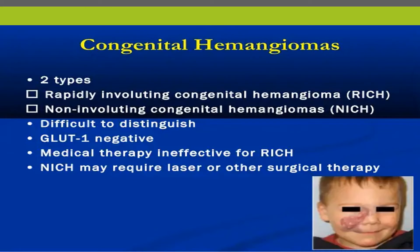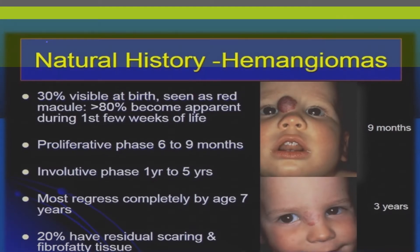Congenital hemangioma is classified into two types: rapidly involuting congenital hemangioma (RICH) and non-involuting congenital hemangioma (NICH). It is difficult to distinguish both by appearance, but both are GLUT1 negative, unlike infantile hemangioma which is GLUT1 positive. Medical therapy is ineffective for RICH, whereas NICH may require laser or surgical therapy.